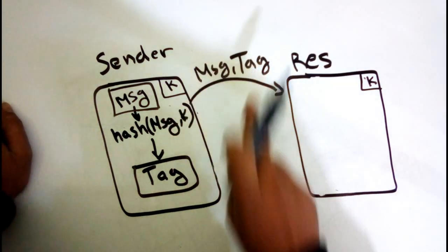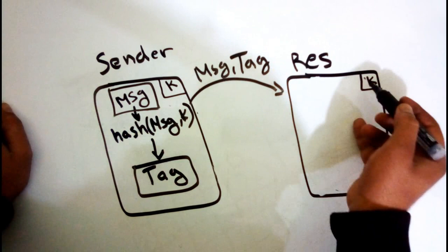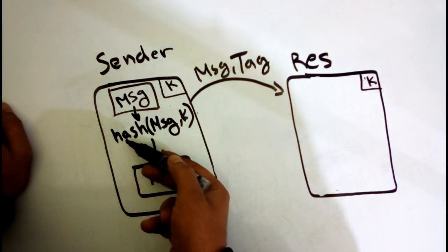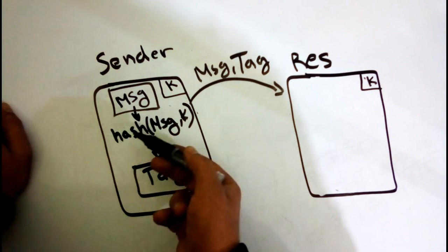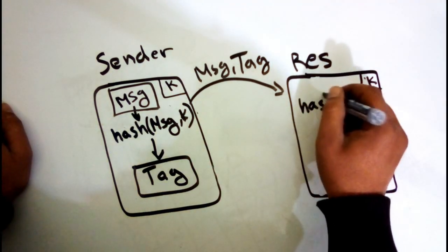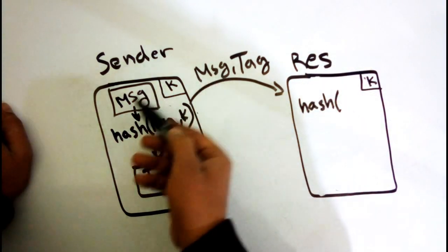The receiver has the common key and the public hash function, the MAC hash function. The receiver hashes the message that it receives from the sender.